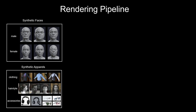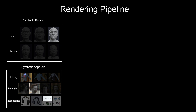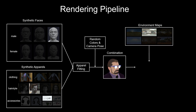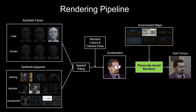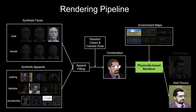We first randomly select an identity and apparels to form a unique combination. We then randomize the colors and camera poses for rendering. Finally, we pair the combination with a random HDR map to render the final output. We can then change the HDR map to get a pair of images under different lightings.